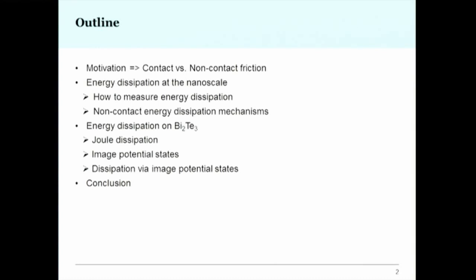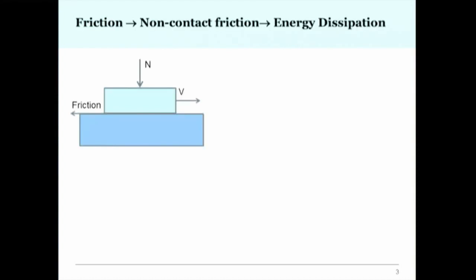I will talk about the technique I use to measure dissipation mechanisms at the nanoscale, and later about the dissipation mechanism in bismuth telluride. Interfaces are not perfectly smooth, so we have rolling frictions and places where surfaces touch, but also regions where a small part is moving without touching yet can still dissipate energy.